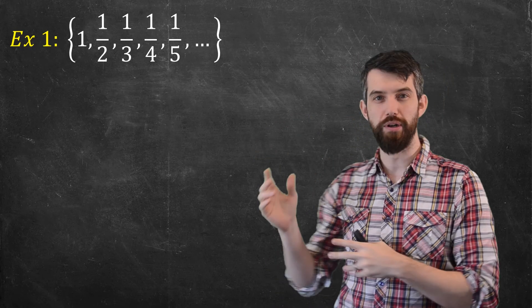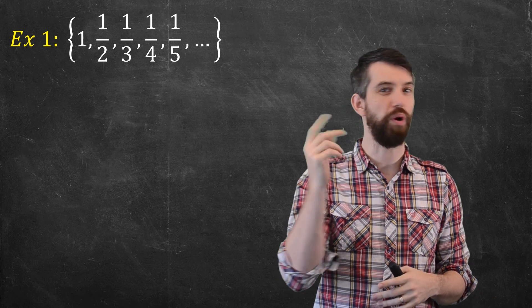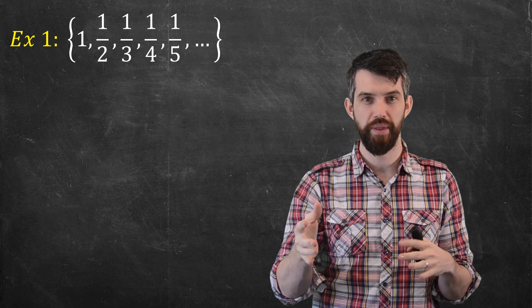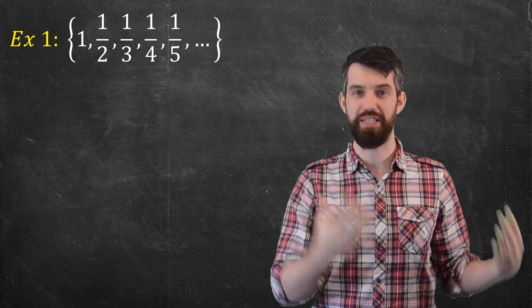Consider this list of numbers: one, one-half, one-third, one-quarter, one-fifth, and so on. This is the idea of a sequence.